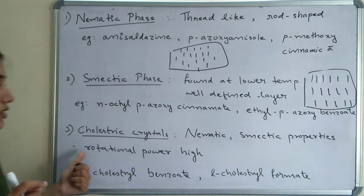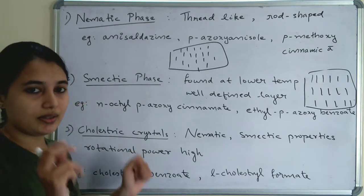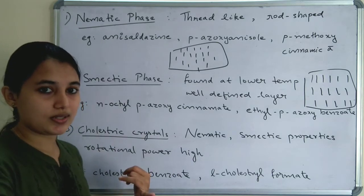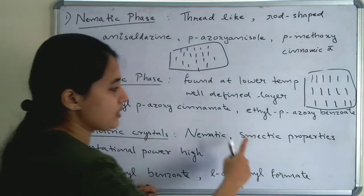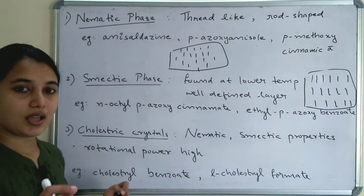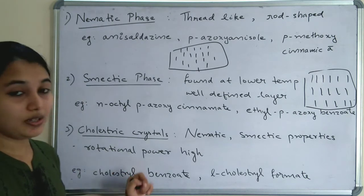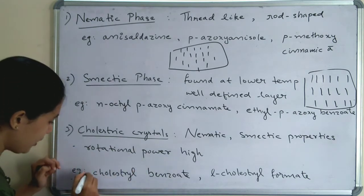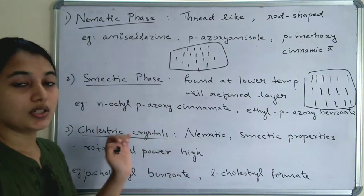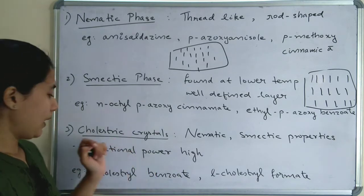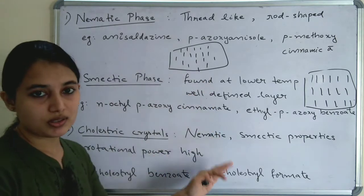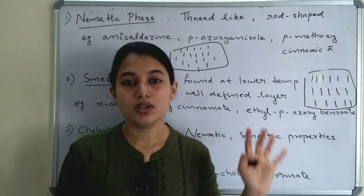The third type is cholesteric crystals. Cholesteric crystals have properties in between nematic and smectic liquid crystals — both nematic and smectic properties are shown. The best examples for cholesteric crystals are para-cholesteryl benzoate and L-cholesteryl formate. Compared to other liquid crystals, cholesteric crystals have a high rotational power value.